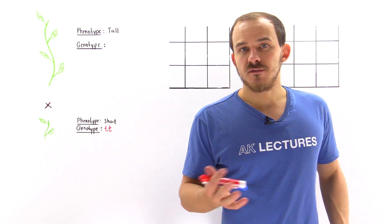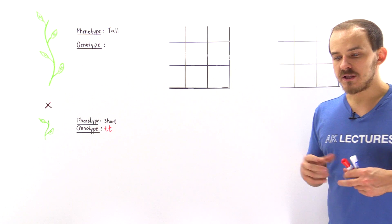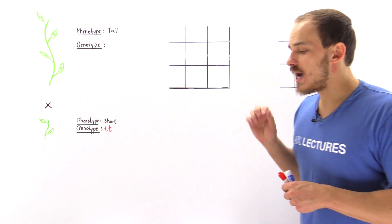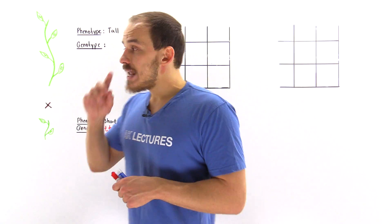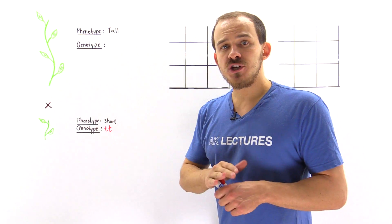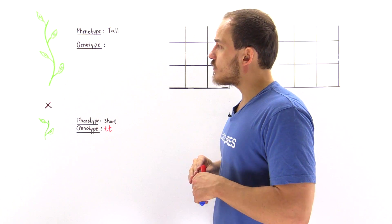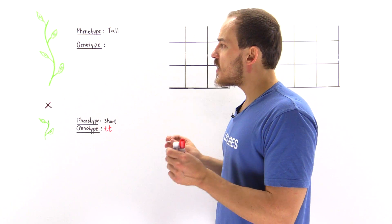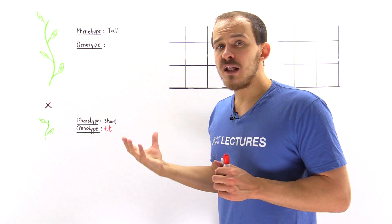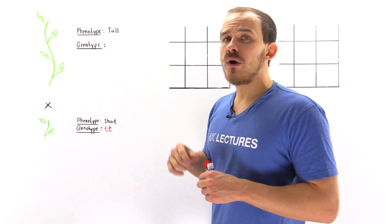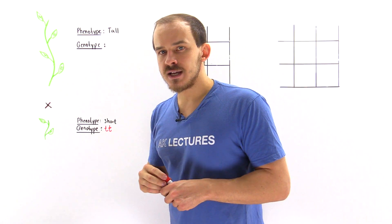Suppose that you are given a plant, and the only piece of information you have about the plant is its phenotype — you know that the plant is tall. We don't actually know what the genotype of that plant is, and the question we want to ask ourselves is: what experiment can we conduct with this plant that will help us determine exactly what the genotype of that tall plant is?